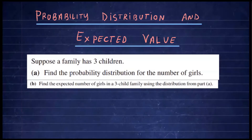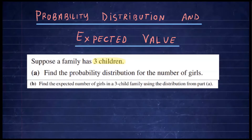In this video, we're going to learn how to create the probability distribution table and find the expected value. We're going to look at this example — it is a binomial experiment because we're repeating the experiment n number of times. Supposing a family has three children, so n equals three. We're going to create the probability distribution for the random variable x, which represents the number of girls in the family.